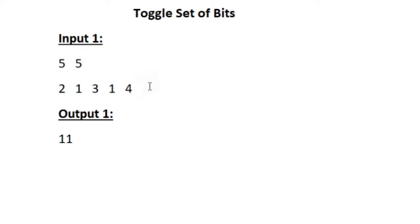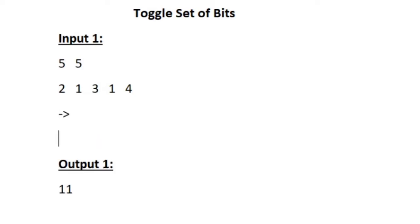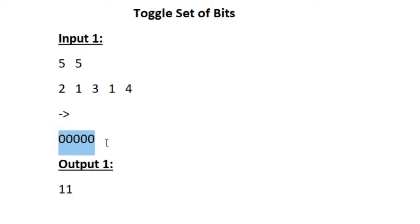Our task is to create a new string of size k with all the characters initially set to zero. I am creating a string with 5 zeros because k is equal to 5 here. This string is actually a binary — a binary representation of a decimal integer.